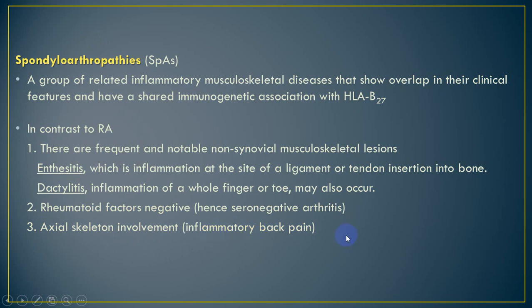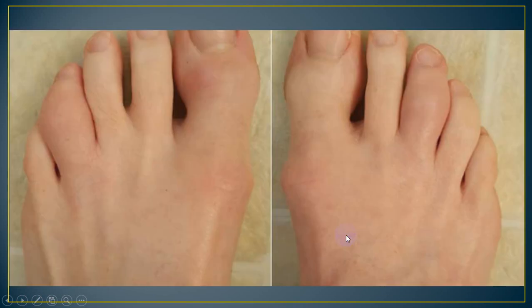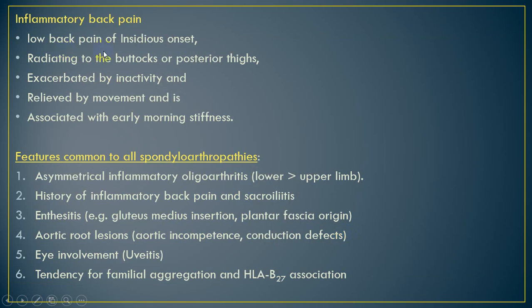What do we mean by inflammatory back pain? Back pain can be divided into two types: mechanical and inflammatory. Mechanical pain is aggravated by exercise or heavy work and relieved by rest, usually with a precipitating factor such as lifting heavy objects. Inflammatory back pain is the opposite — it is low back pain of insidious onset radiating down the buttock or posterior thigh, exacerbated by rest and relieved with exercise, associated with early morning stiffness lasting more than one hour.